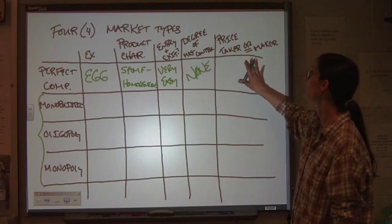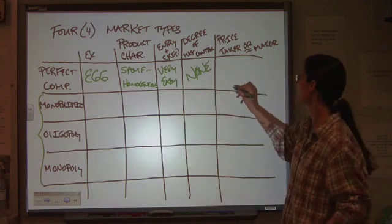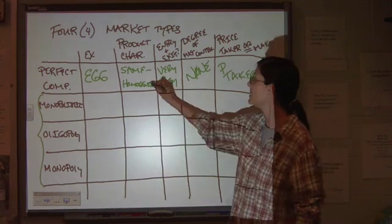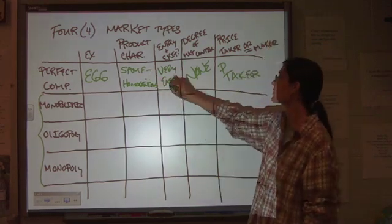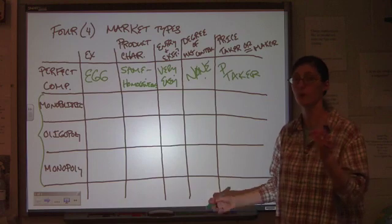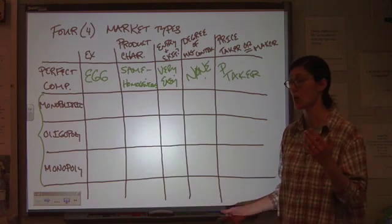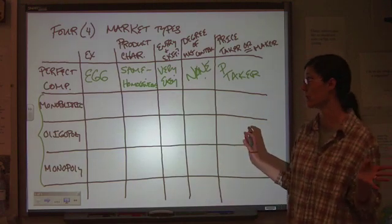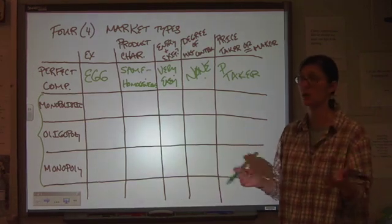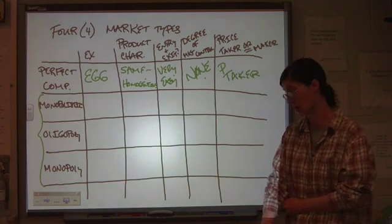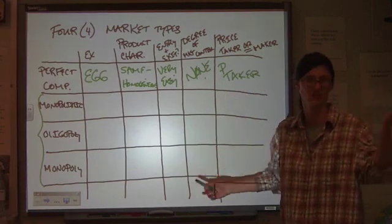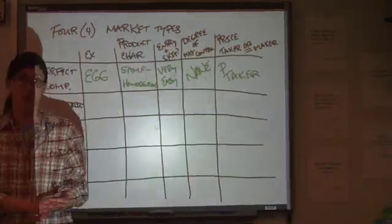All right. So for a perfectly competitive firm, price taker or price maker? Price taker. What's the key? Same product, easy entry and exit, no price control. These two things tie together. Lots and lots of buyers and sellers. No individual has any impact whatsoever on the market. By the way, we're out of eggs. Well, and yet it makes no difference to the market. True. The market does not care. You might care, but the market, they don't even notice. All right, so that's our starting point.